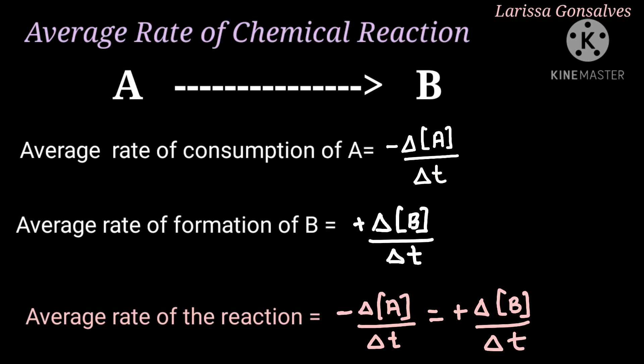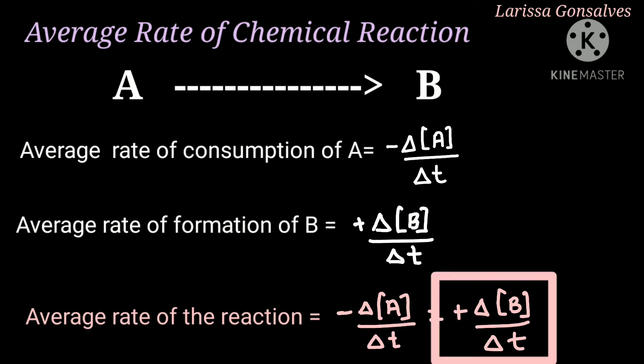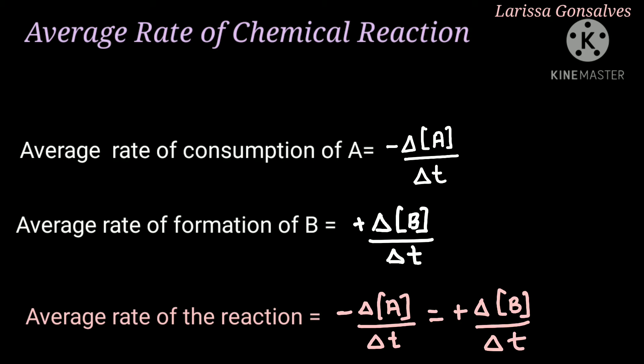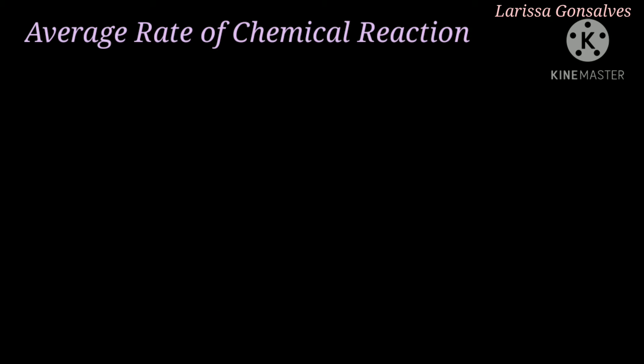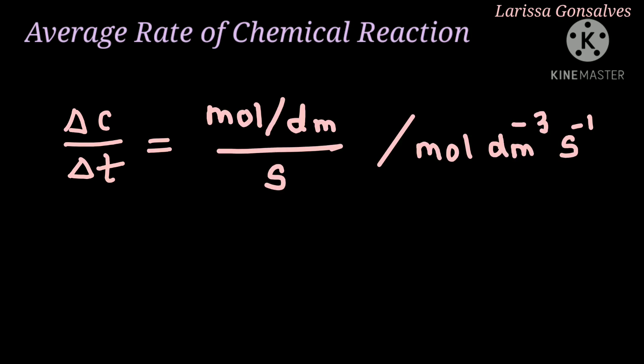The rate of the reaction represents a decrease in concentration of the reactant per unit time, or increase in concentration of product per unit time. In the average rate of reaction, concentration is divided by time. Hence, the unit used to measure is mole per dm³ per second.